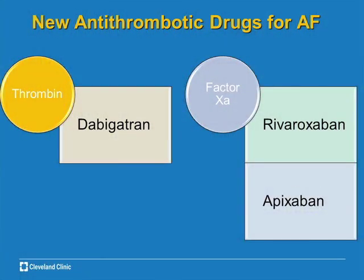This is the ideal anticoagulant. Recently, we've had three medications that are one step closer to being ideal: dabigatran, rivaroxaban, and apixaban. Dabigatran works on thrombin — it is a thrombin inhibitor. The other two are factor Xa inhibitors. They all work on the coagulation cascade to block the formation of a thrombus.